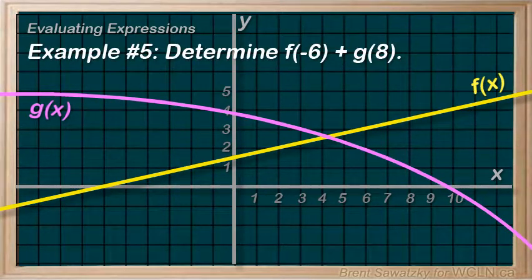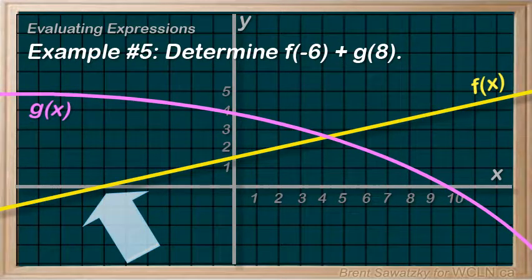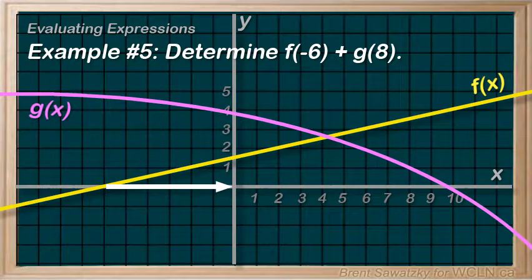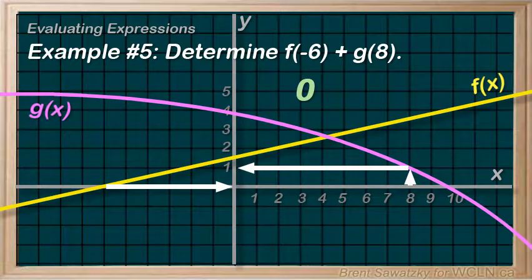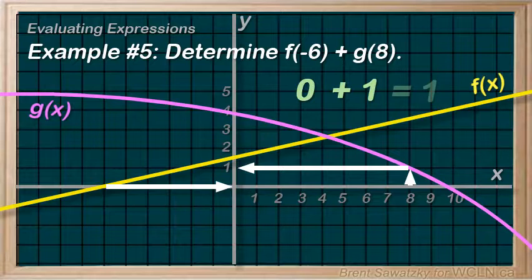Example 5: Determine f(-6) plus g(8). This one involves both graphs. Let's replace each with the appropriate values. At x equals negative 6, we can see that the y value of function f is 0 — it's right on the axis. So we replace f(-6) with 0. Next, at x equals 8, the y value of function g is 1. So we replace g(8) with 1. We're simply asked to add 0 and 1 for a total of 1.